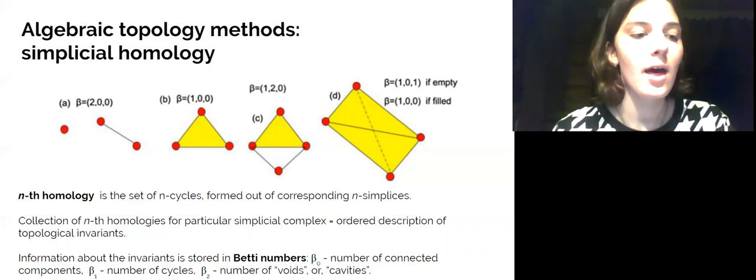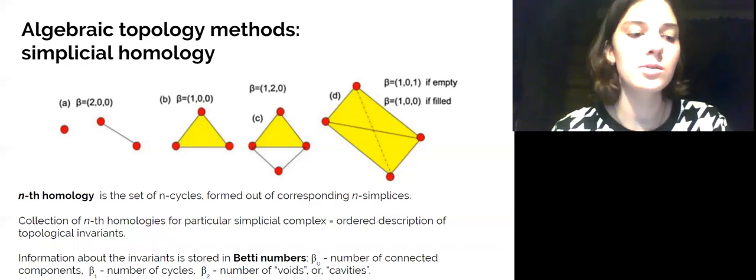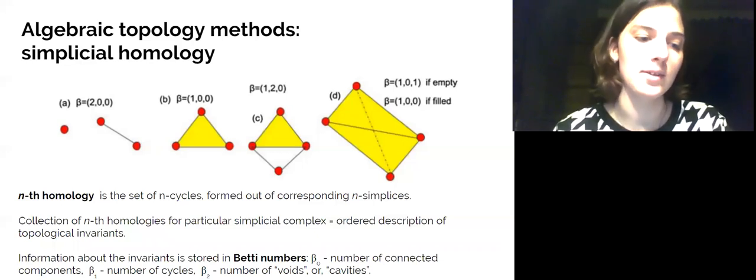More precisely, n-homology of a complex is a collection of n-dimensional cycles that, in turn, represent a group of specifically arranged n-dimensional simplexes, forming an n-dimensional hole on the topological surface. Zero-dimensional cycle is a connected component, one-dimensional is a circular hole, two-dimensional is called void or cavity.